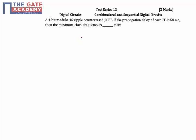In the given problem, we have a 4-bit modulo-16 ripple counter using JK flip-flops. The propagation delay of each flip-flop is 50 nanoseconds—this is a correction, it's nanoseconds, not microseconds. The question asks: what is the maximum clock frequency?